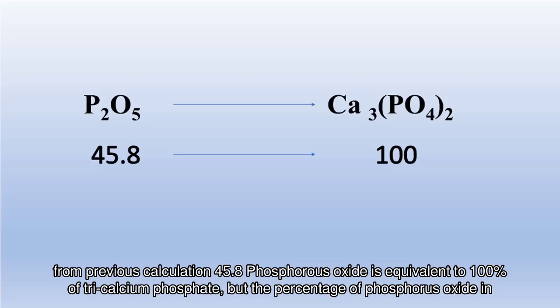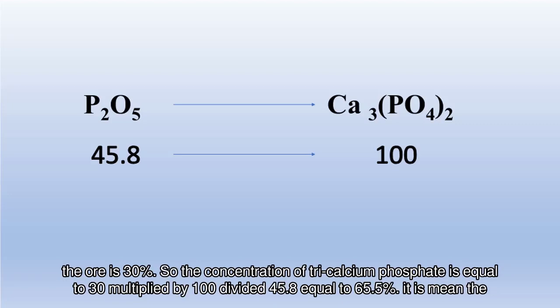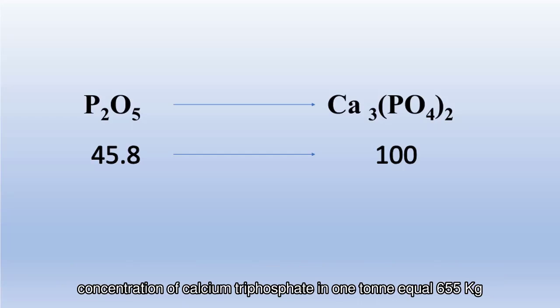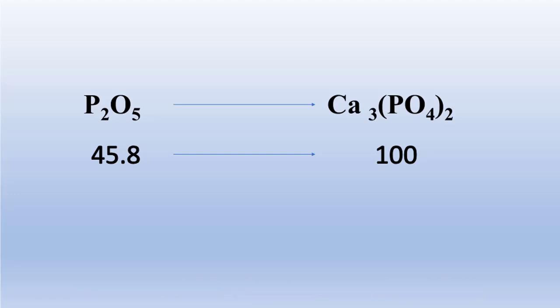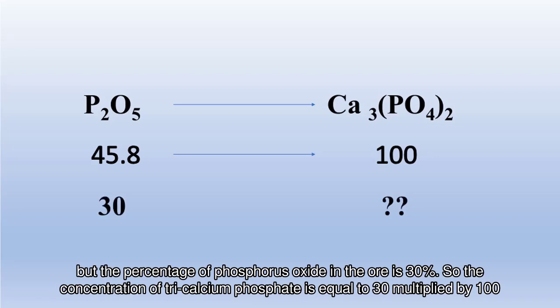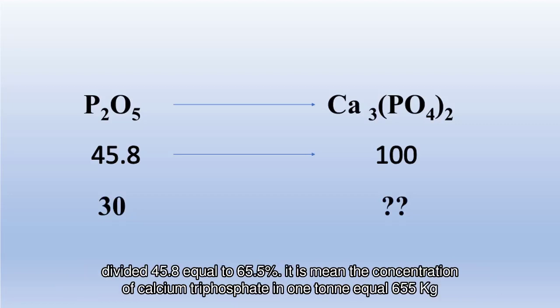Since the percentage of phosphorus oxide in the ore is 30%, the concentration of tri-calcium phosphate is equal to 30 multiplied by 100 divided by 45.8, which equals 65.5%. This means the concentration of calcium tri-phosphate in one tonne equals 655 kilograms.